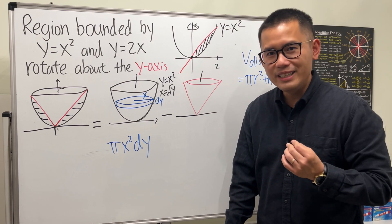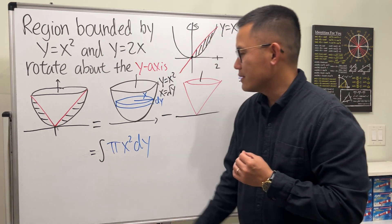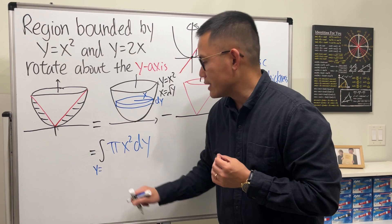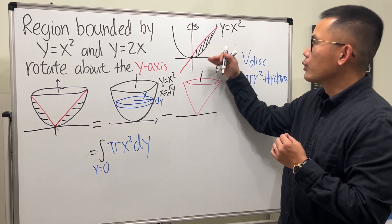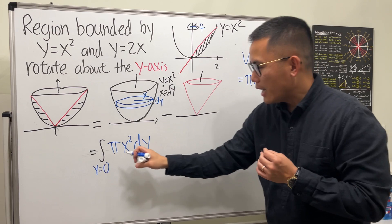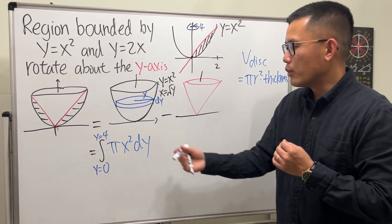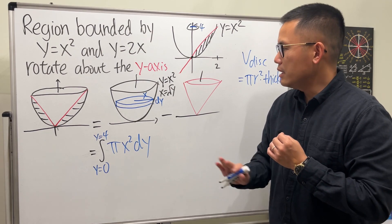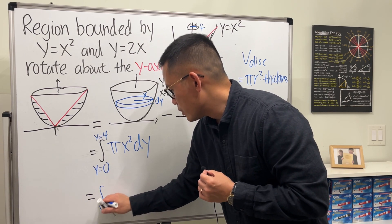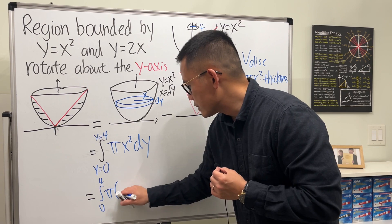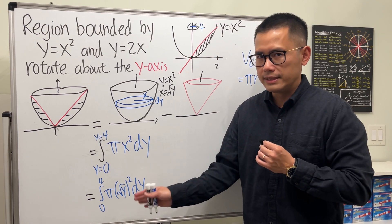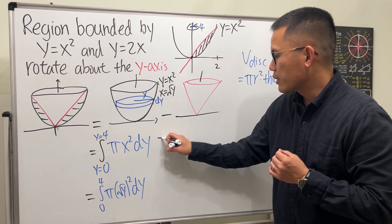We add up everything using an integral. We're in the y-world, so we integrate from y equals 0 to y equals 4 — when x equals 2, y equals 4. Substituting x equals square root of y, the first integral is the integral from 0 to 4 of pi times (square root of y) squared dy, and the square and square root cancel, making it straightforward.